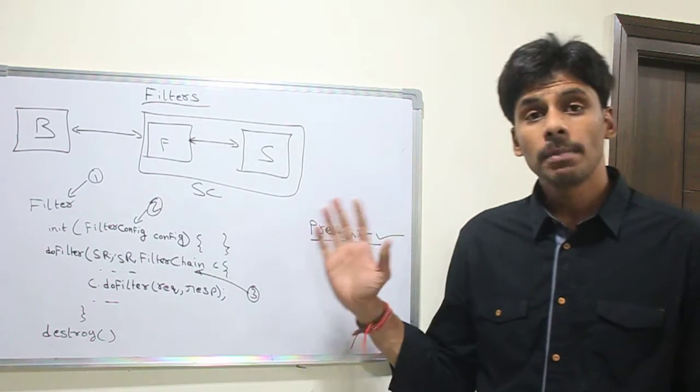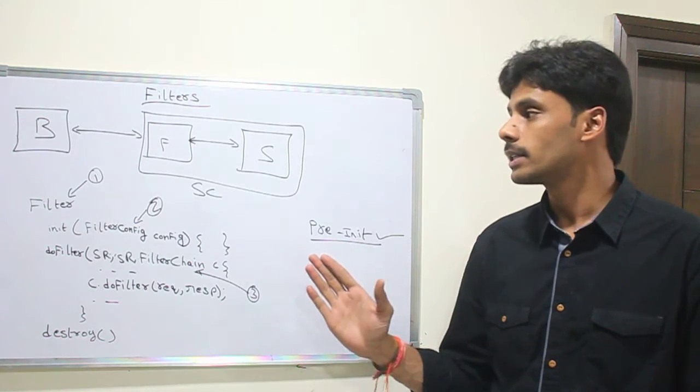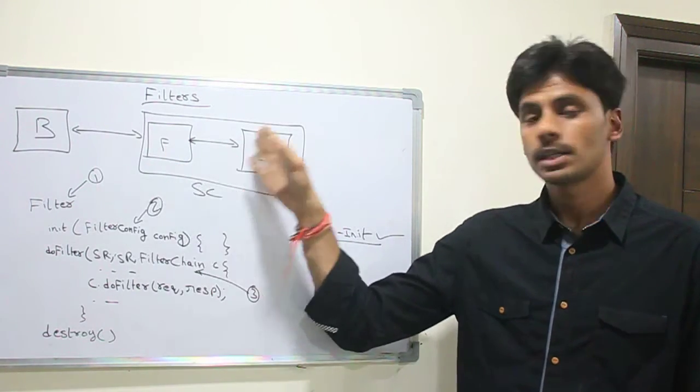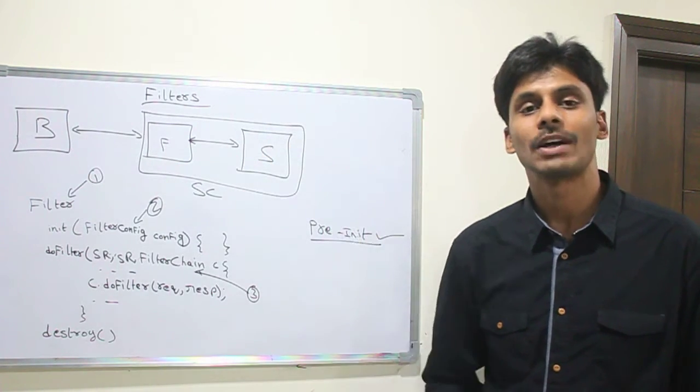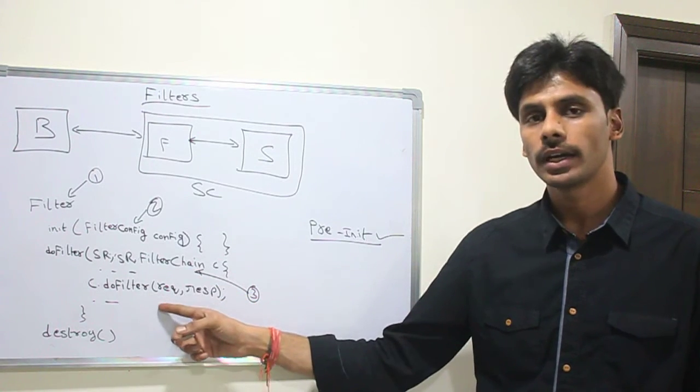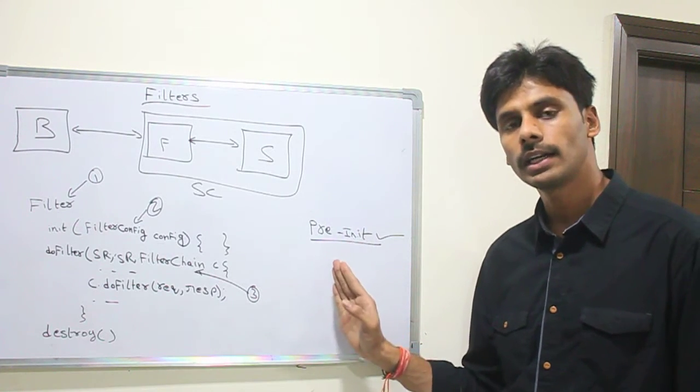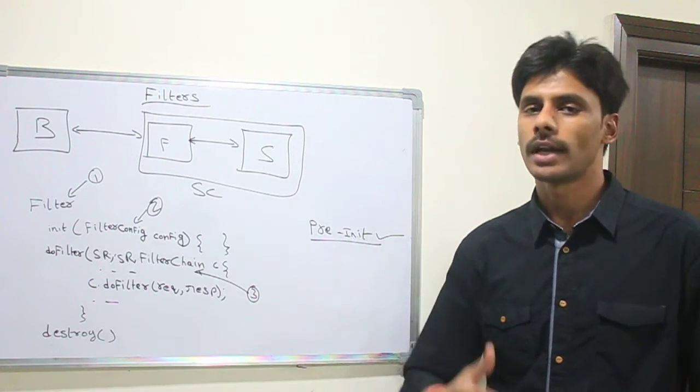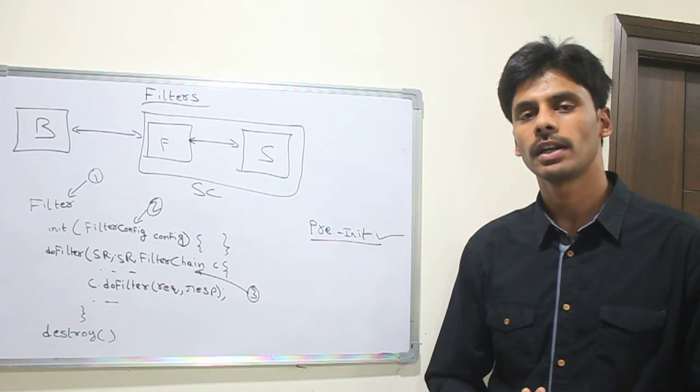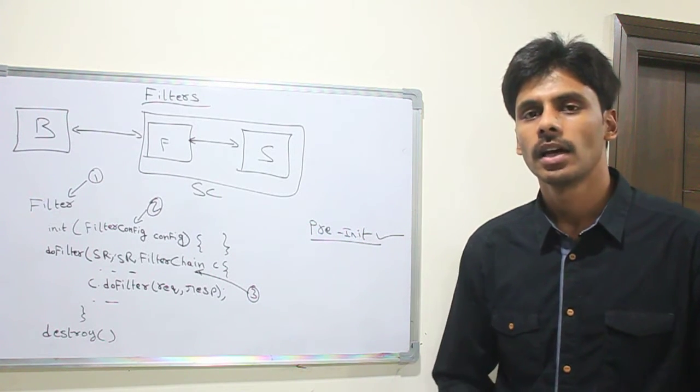You can have multiple filters applied to one single servlet, or you can have one single filter applied to multiple servlets. So when you apply multiple filters before the request gets to your servlet, it's called filter chaining. So in this doFilter, when you do a doFilter request response, the container, instead of sending the request to another servlet, it will send it to another filter. You can have any number of filters in between, and then at the end of it, it will go to the actual servlet that is serving the particular business logic.